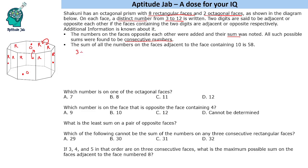First, we will add the numbers from 3 to 12. Using the AP formula (n/2 × (a + l)), we get the sum as 75. Now, 75 should be expressed as a sum of 5 consecutive numbers, since there are 10 numbers and therefore 5 pairs of opposite faces.